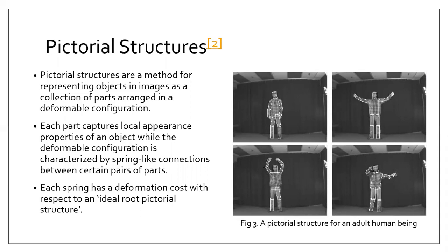To explain this, let's say that we want to detect a particular person in the image, but imagine there is another person in the same image. There is a possibility that the head of one person is detected while the hand of the other person is detected, which is not expected. This will be taken care of by the deformation cost, which will be significantly high if the two parts are far away from the ideal root pictorial structure — in this case, the target person.